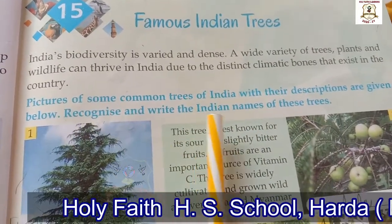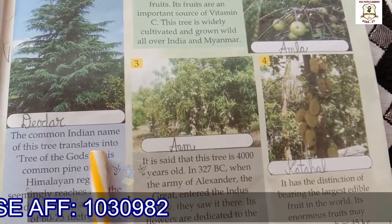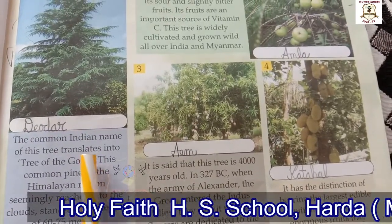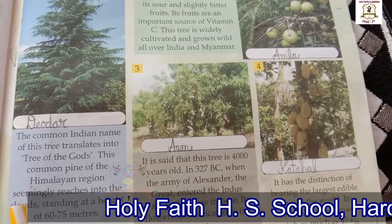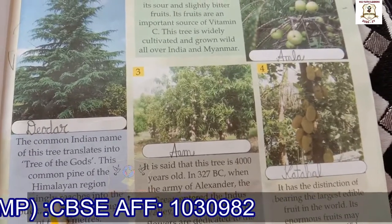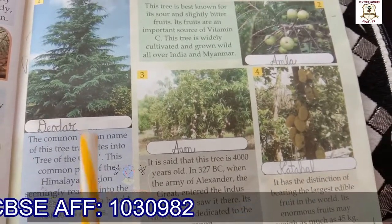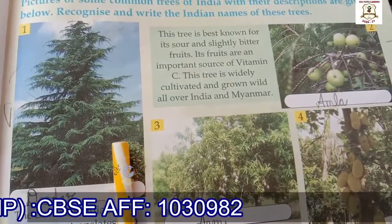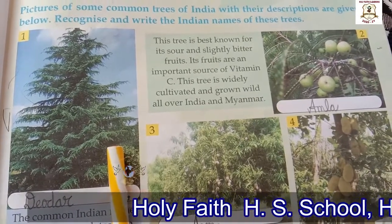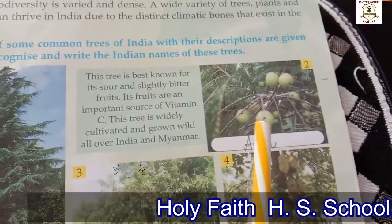Pictures of some common trees of India with their descriptions are given below. Look at picture number one. The description says the common Indian name of this tree translates into 'tree of the gods.' This common pine of the Himalayan region seemingly — meaning appearing to be something especially when it is not true — reaches into the clouds, standing at a height of 60 to 75 meters. The name of this Indian tree is Deodhar.